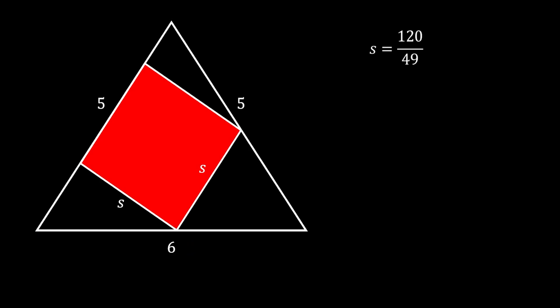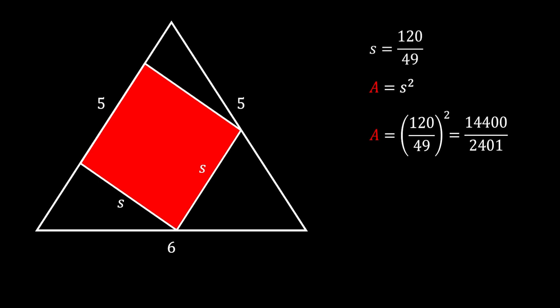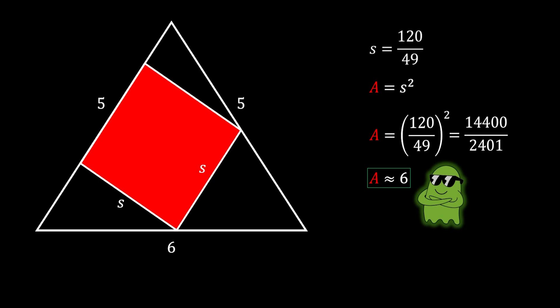Again, we find the area as S squared. Substituting our side value, we get the same result as before: 14,400 over 2,401, which approximates to 6 square units. That is our solution. I hope you enjoyed this interesting problem. If you did, please leave a like or subscribe to the channel. If you found another way to solve this problem, write it down in the comment section below. Until next time, see you all and take care.